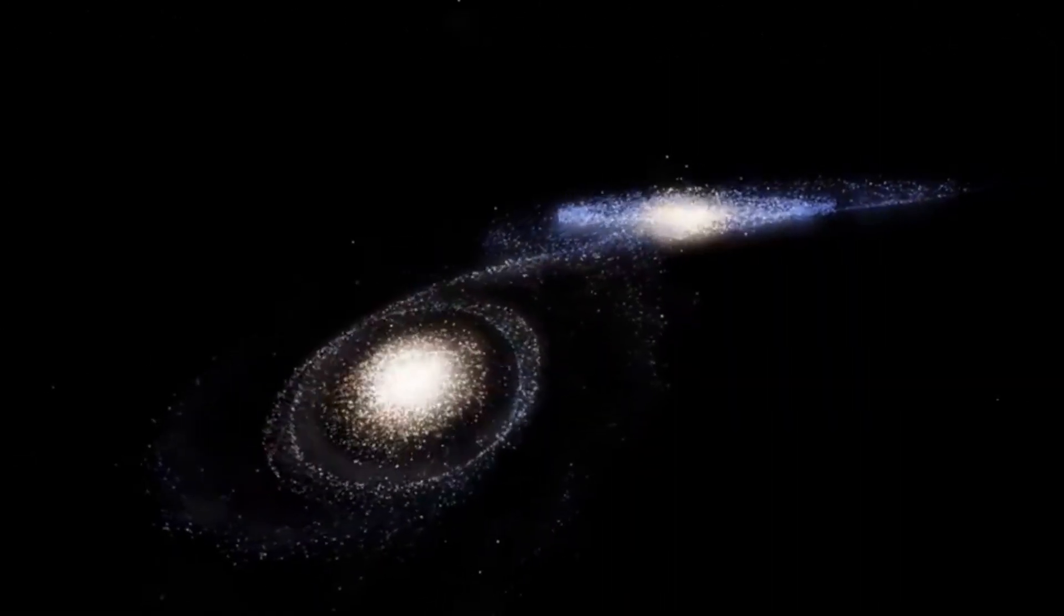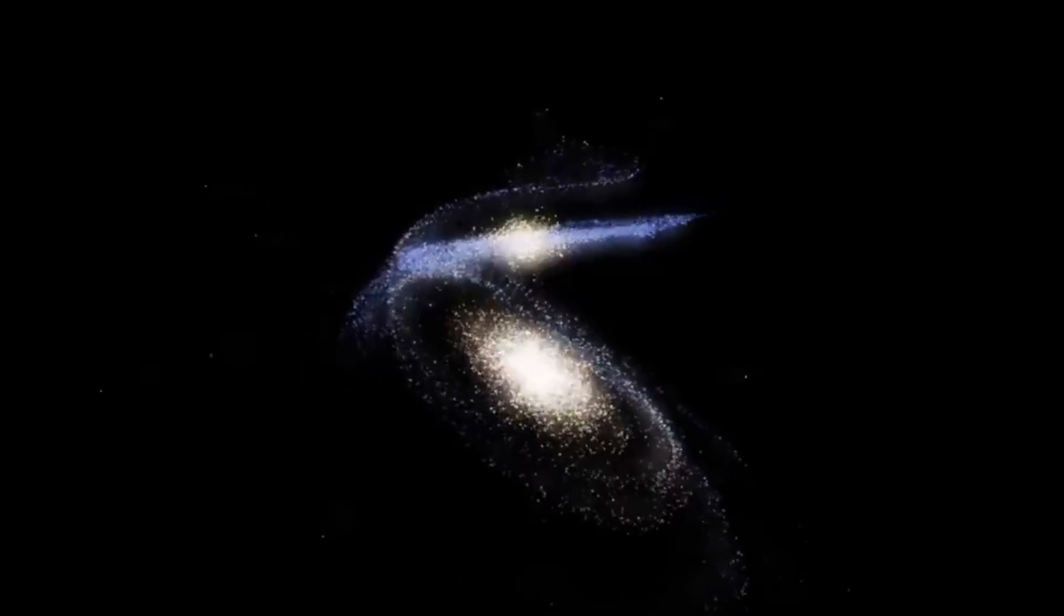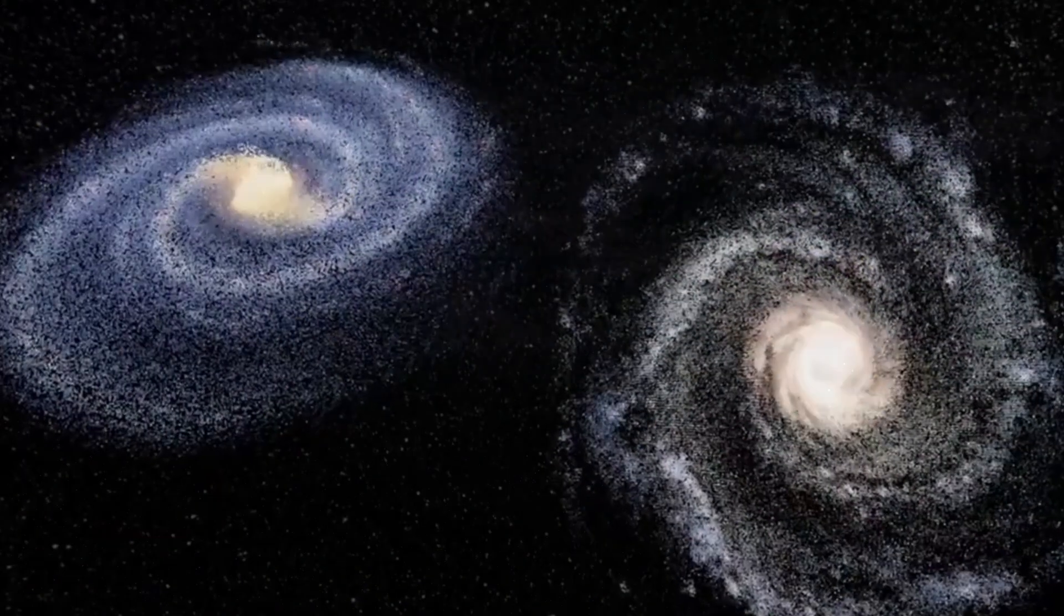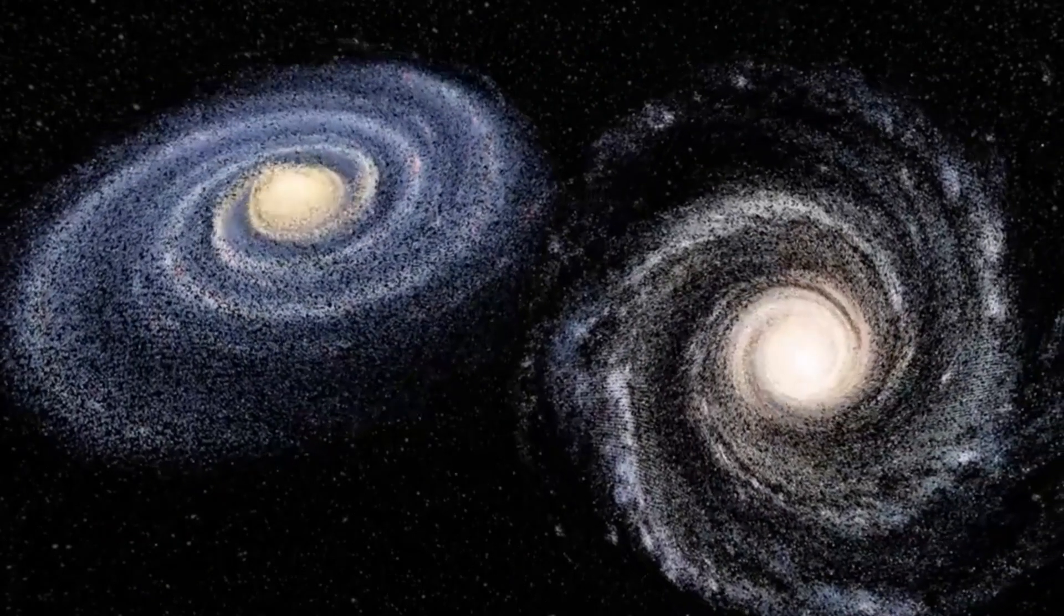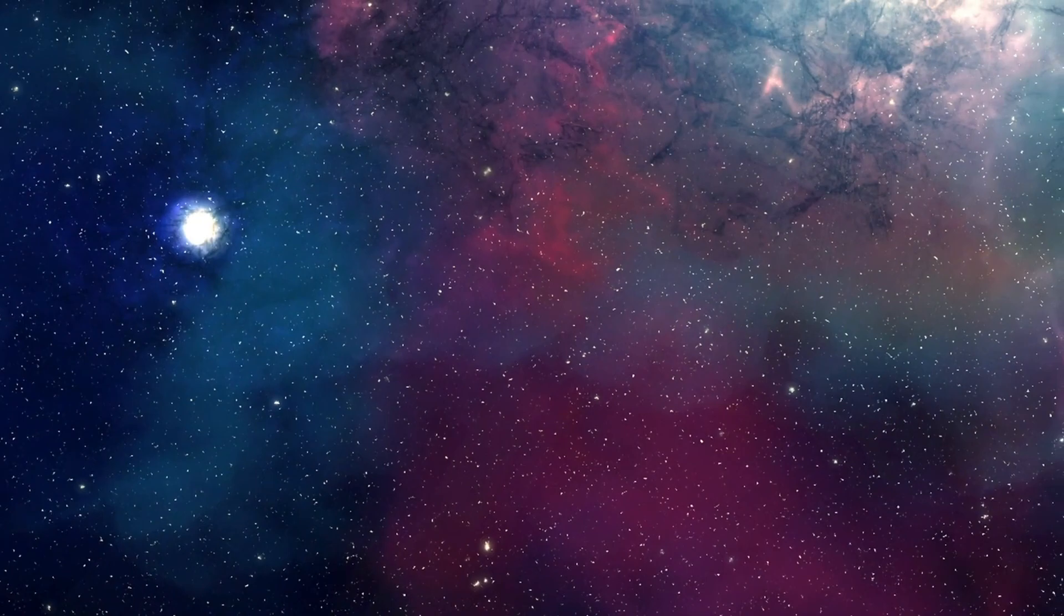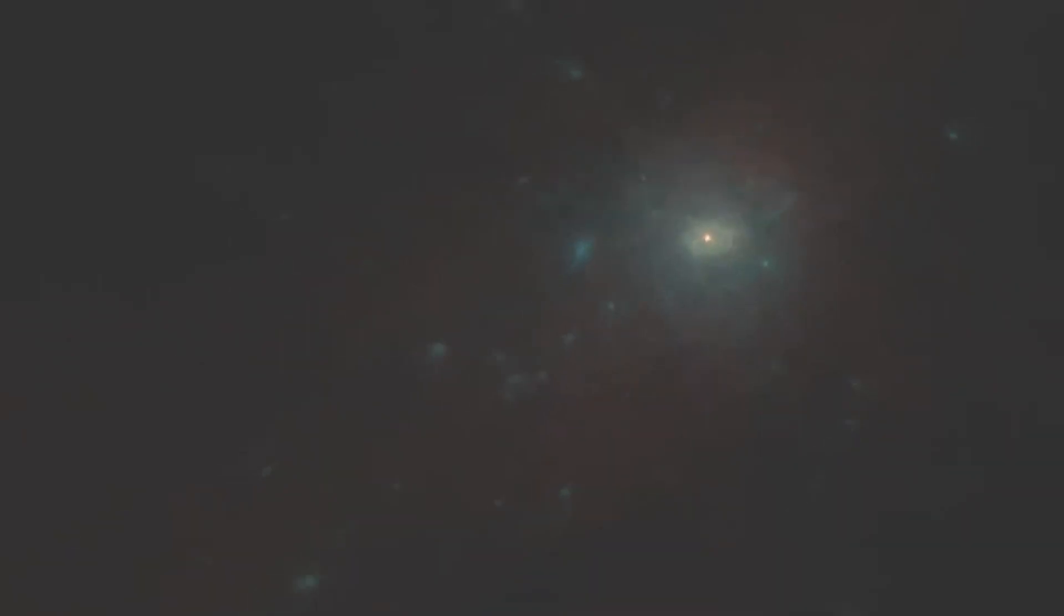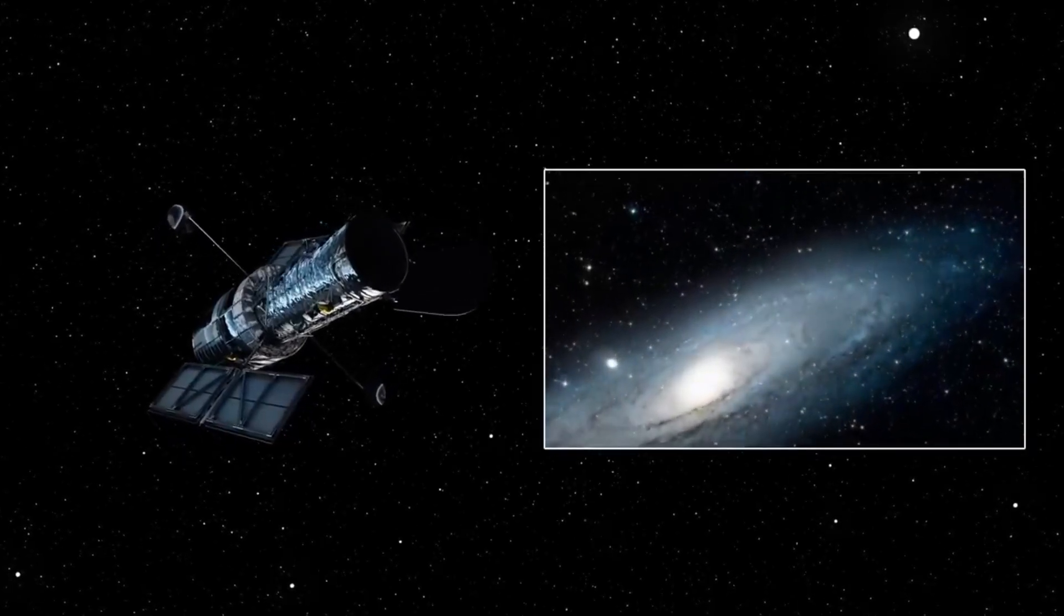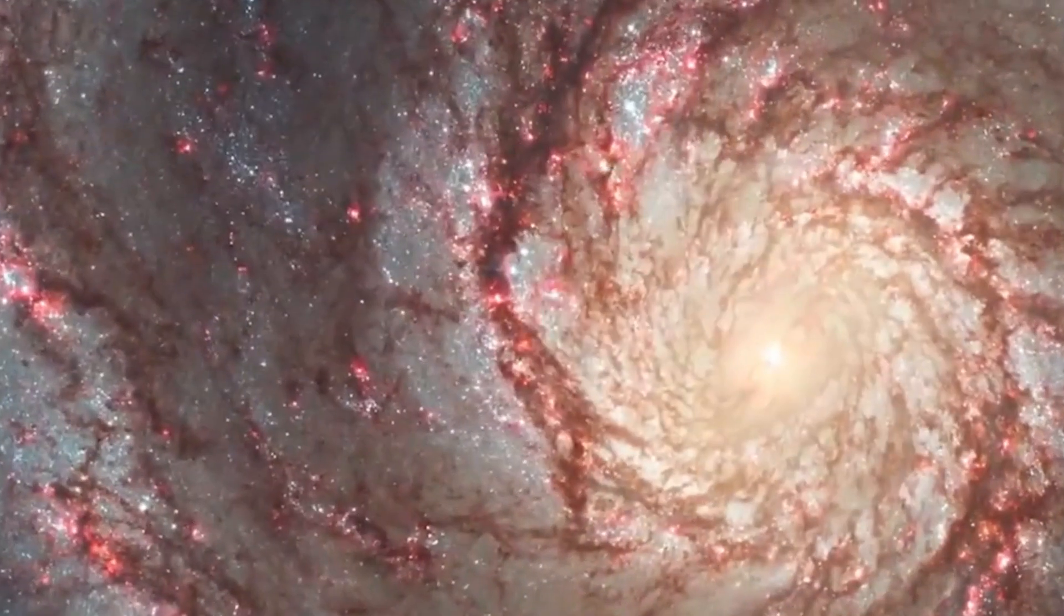Our Milky Way galaxy is on an epic cosmic collision course with Andromeda that will reshape our stellar neighborhood. But this majestic galactic merger has secretly already begun. Recent discoveries have shown the ghostly outskirts of Andromeda and the Milky Way are subtly overlapping even now. Astronomers call this diffuse material surrounding every galaxy a galactic halo. It's invisible to the naked eye, but Hubble Space Telescope precisely mapped Andromeda's halo and found it stretches an astonishing 2 million light-years from its bright center.